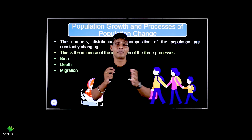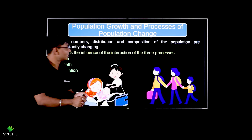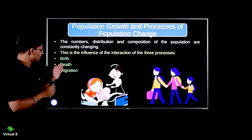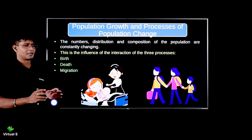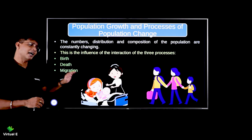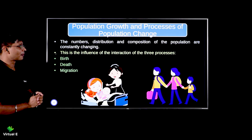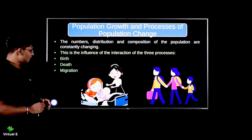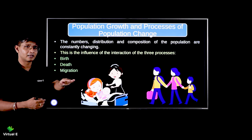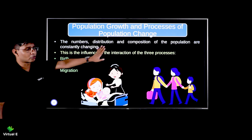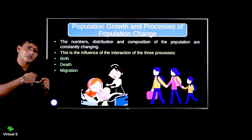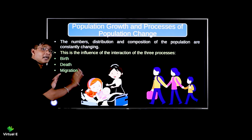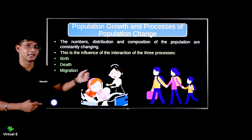Hello students, welcome back to Numbers. Let's talk about population and how the number of people changes. We have this big chain: birth, death, migration — three simple words but very important in explanation. These three processes contribute to population growth. Distribution and composition of population always changes, and the factors that change it are birth rate, death rate, and migration.